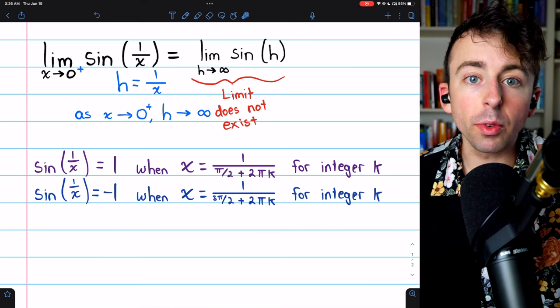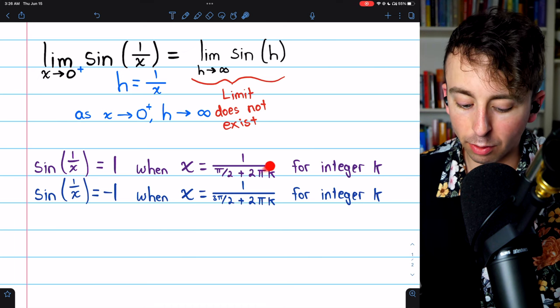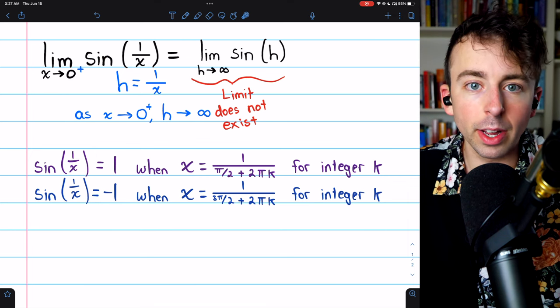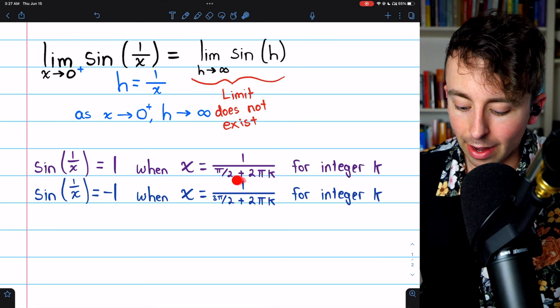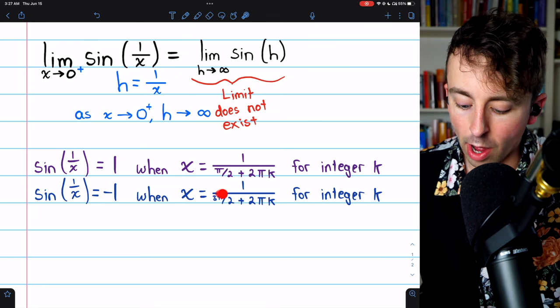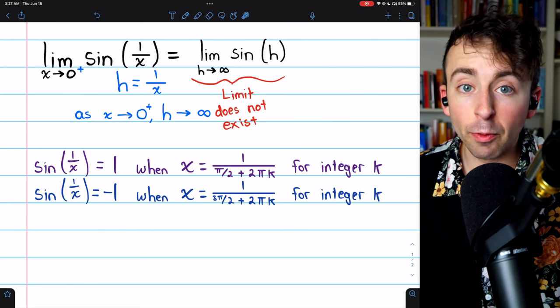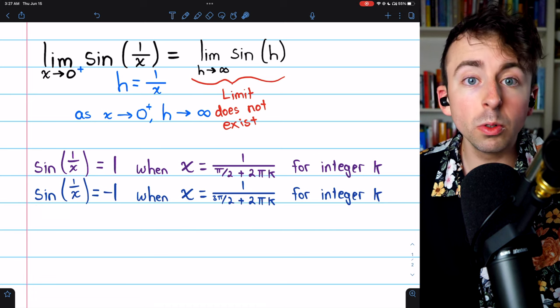And at every one of those infinitely many times that x is equal to a value of this form, sine of 1 over x is going to equal positive 1. Similarly, there's infinitely many times where x will take on a value like this. 1 over 3 pi over 2 plus 2 pi k. Every time it does, sine of 1 over x is going to be equal to negative 1.